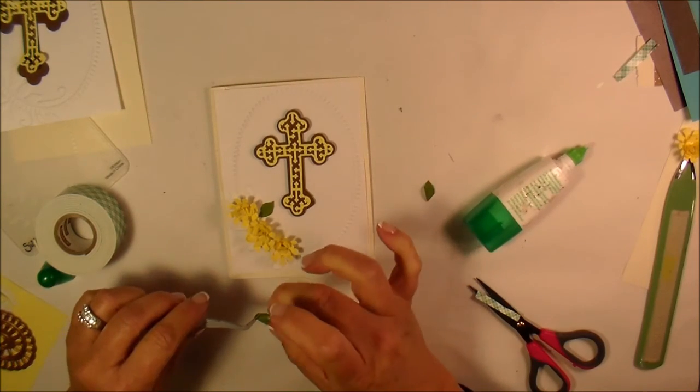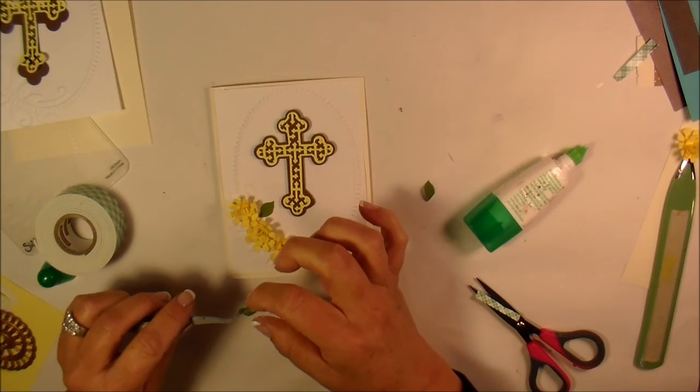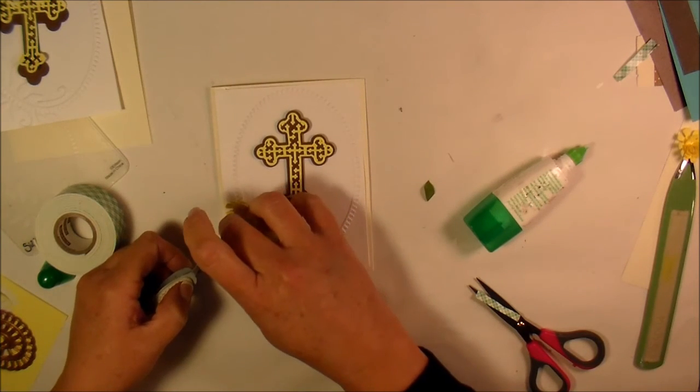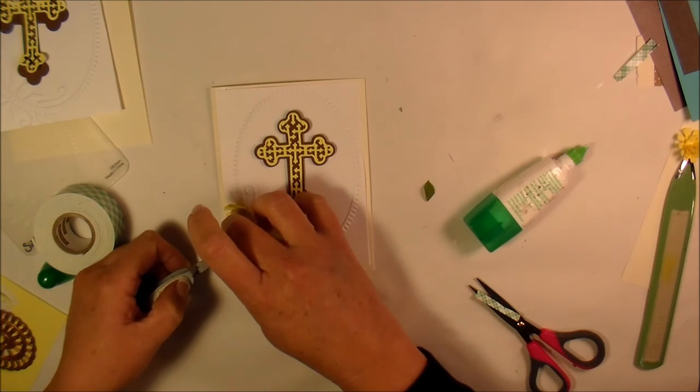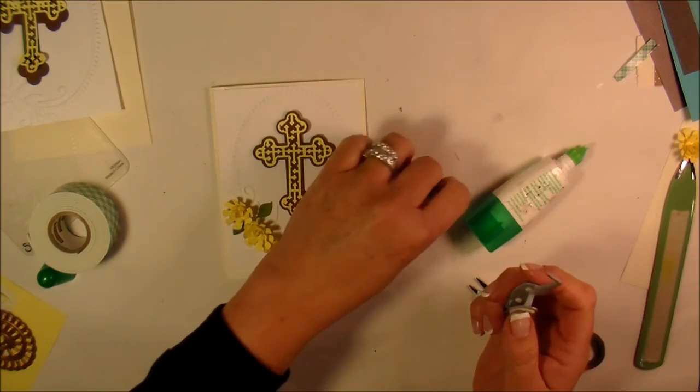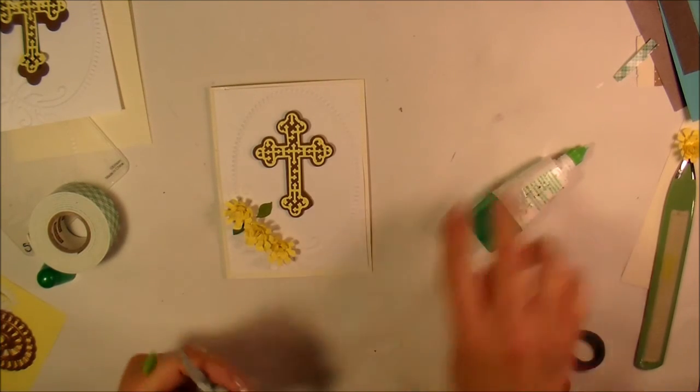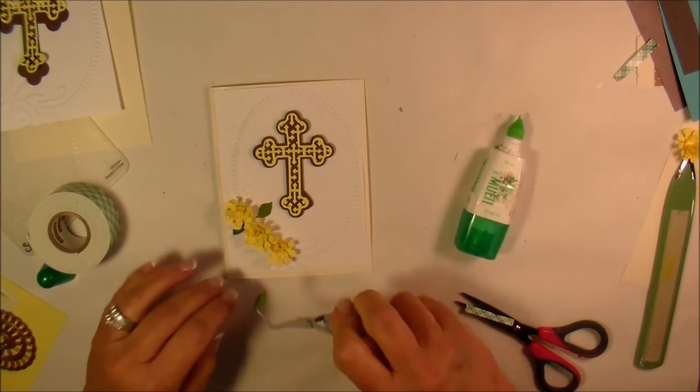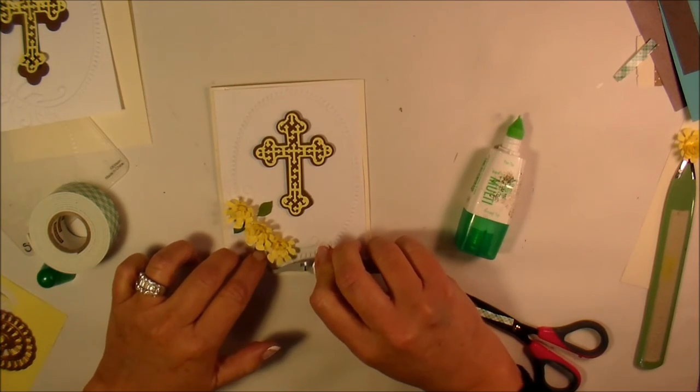Now, when this is all done drying, I'm going to go ahead and give the leaf a little bit more dimension. Again, I want to put color in this, but I don't want to cover up the embossing. And I'll put this one right here.